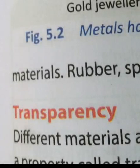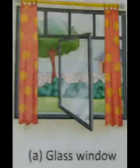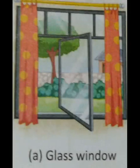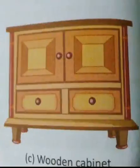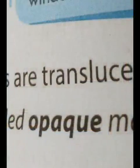The ability to allow passage of light through them is called transparency. Based on transparency, materials can be of three types: transparent, translucent, and opaque. The glass of a window is a transparent material as it allows light to pass through easily. Frosted glass is translucent as it allows light to pass partially. A wooden cabinet is opaque and does not allow light to pass through at all.